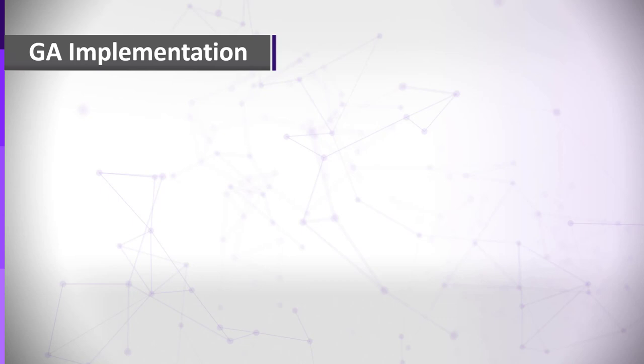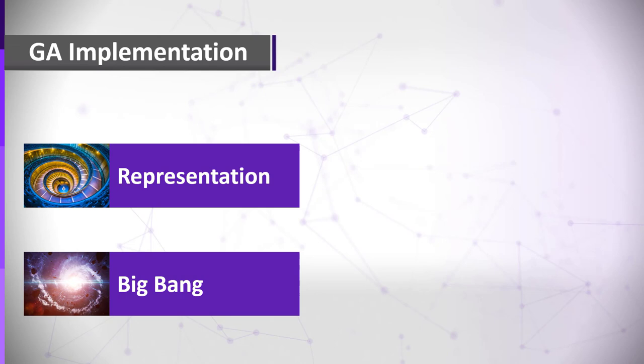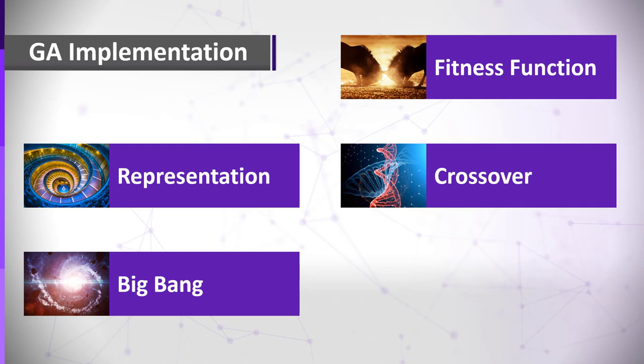In order to implement any GA, we need to decide on the chromosomal representation, create an initial population with random process, compose a fitness function, decide on a genetic crossover mechanism, and, of course, on mutations. Let's begin with representation. The representation could be something like this. Let's assume again, for simplicity, that we have only 10 circles. So for each circle, we need to represent its position on the screen in the x-axis and in the y-axis, as well as define a radius and a color. This matrix would represent one solution, one individual, in the population.